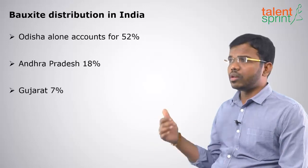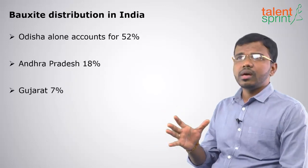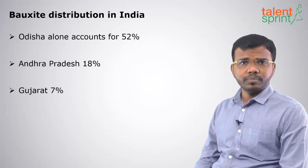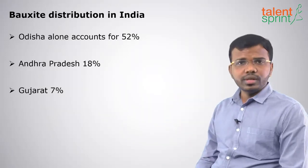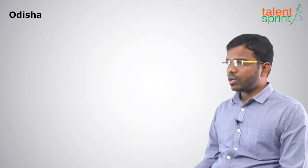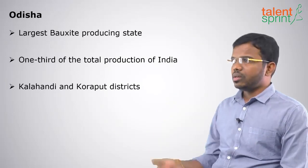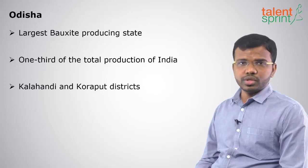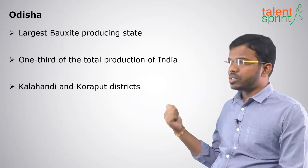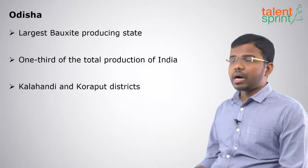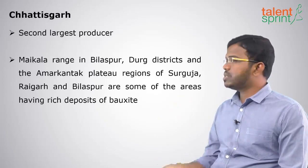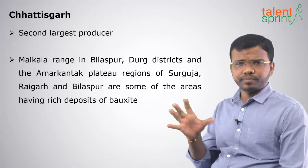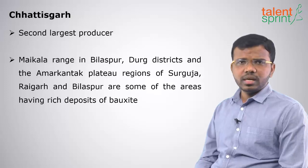Regarding Bauxite distribution in India, Odisha alone accounts for more than 50% of Aluminium production in India — you can say Aluminium means Odisha. The next state is Andhra Pradesh with 18% and Gujarat has 7%. Odisha is the highest contributing state and the largest Bauxite producing state, with one third of the total production coming from Odisha itself.